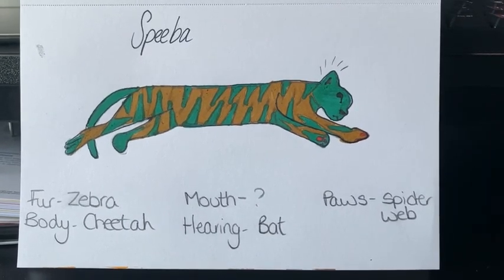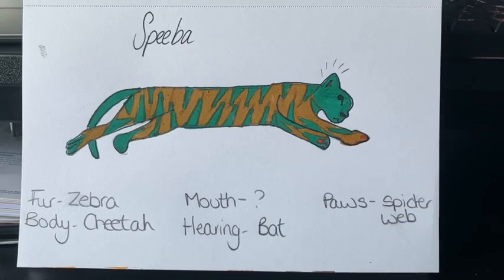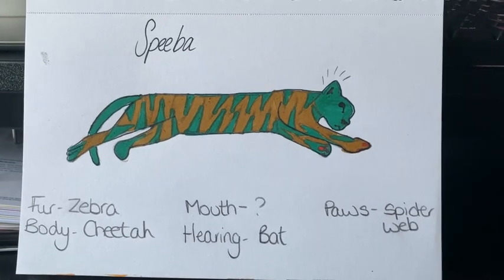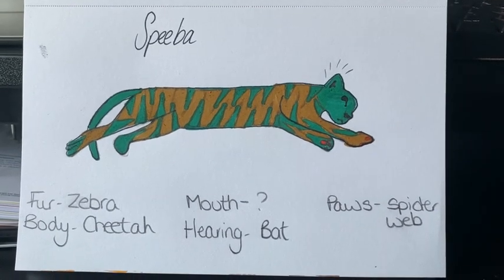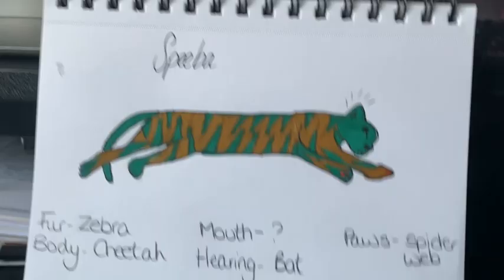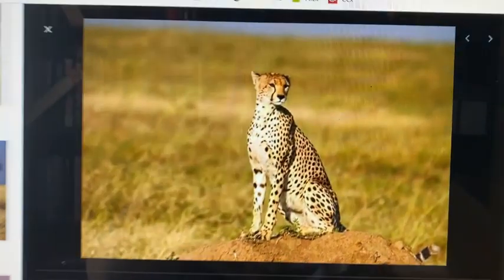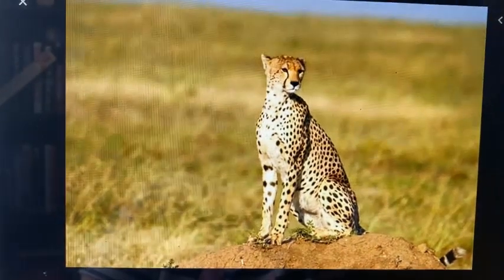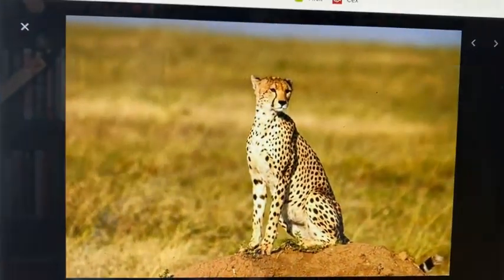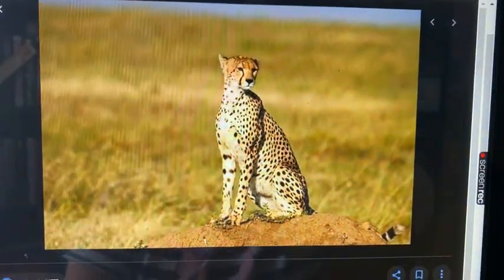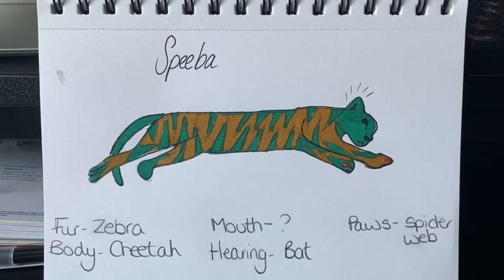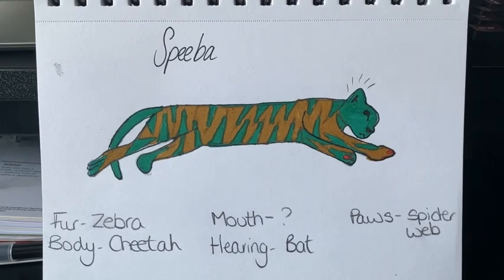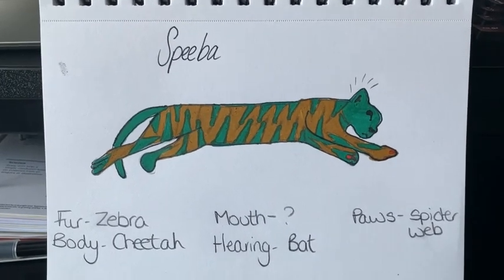For the fur I've taken inspiration from a zebra, but instead of black and white stripes I've changed the colours to blend in with its natural habitat. I looked online and found lots of browns, greens, and pale yellows, which would be perfect for a cheetah to camouflage and blend in with its surroundings so the prey would have no idea it is there.